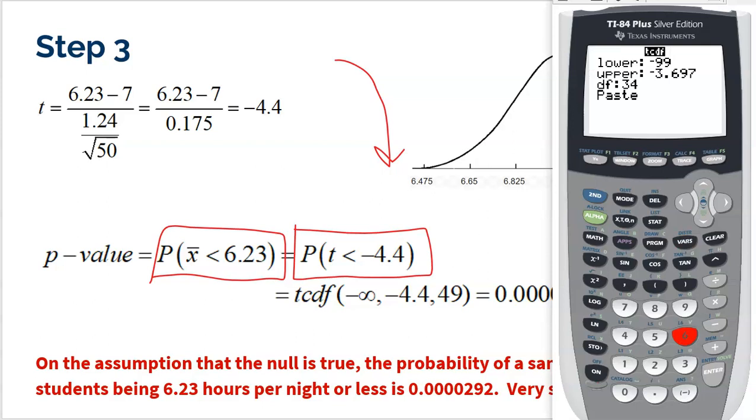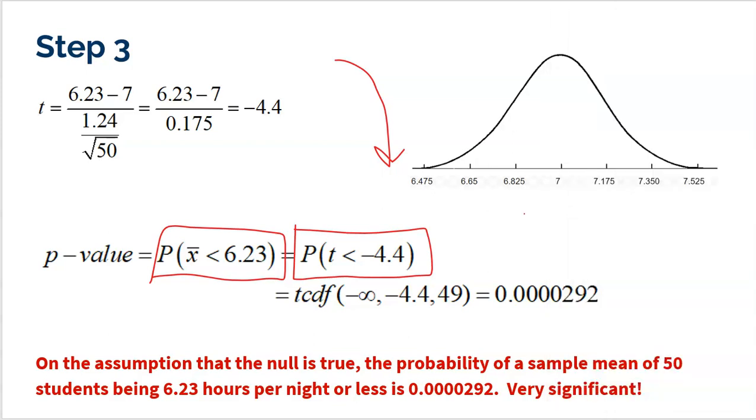Now, remember, we want to look lower than negative 4.4. So I'm going to use negative 99 to negative 4.4. And then don't forget, you do have to put in the degrees of freedom because it needs to know which t-model to use. With 50 kids in my sample, that's 49 degrees of freedom.